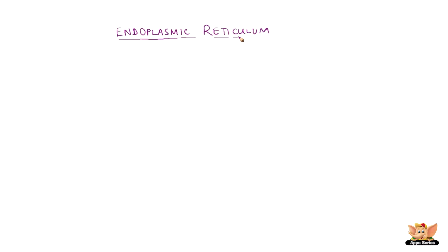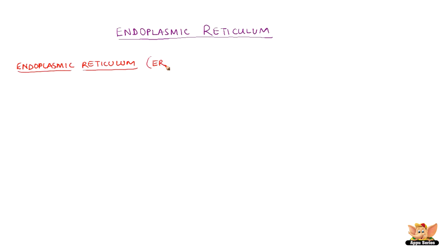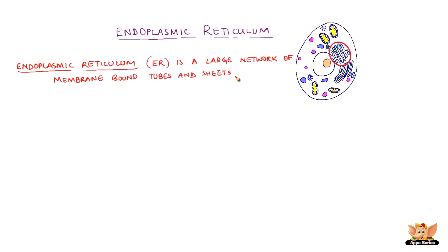Endoplasmic reticulum is one of the organelles found in the cell. Endoplasmic means 'within the plasm' and reticulum means 'network.' Endoplasmic reticulum, represented as ER, is a large network of membrane-bound tubes and sheets.